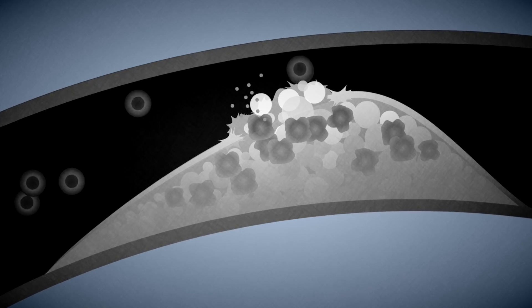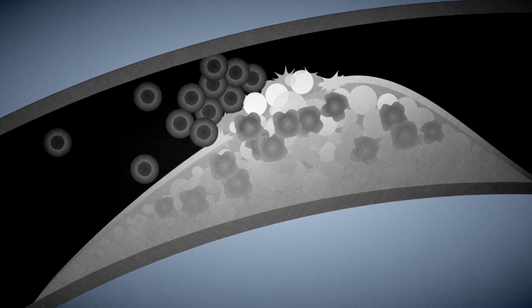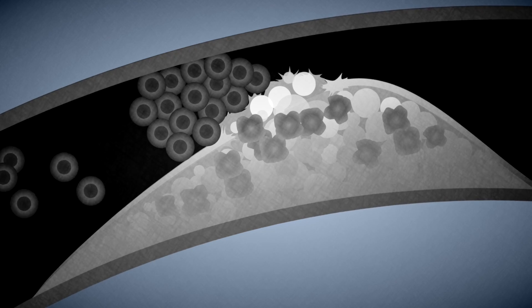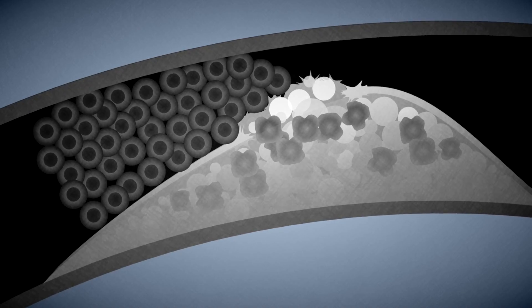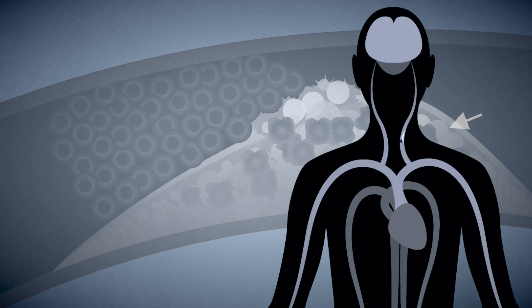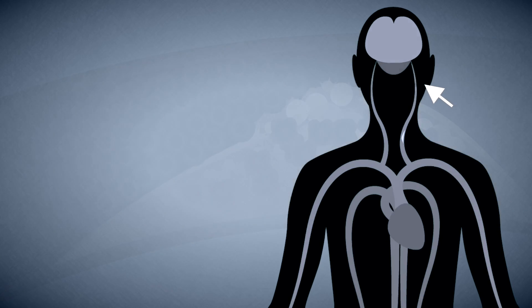If a plaque ruptures, that causes formation of thrombus which causes blood clots, and the blood clots could stop the blood either at the site of the rupture or further downstream like in the brain, causing stroke.